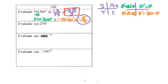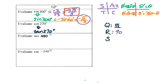Now let's go to cotangent 270 degrees. We need to find tangent 270 degrees first. For 270 degrees, that's either fourth or third quadrant. Let's do third quadrant. The reference angle is 90 degrees. For tangent in the third quadrant, it's positive. So positive tangent 90 degrees, which is undefined. For cotangent, we do 1 over undefined, which equals 0.